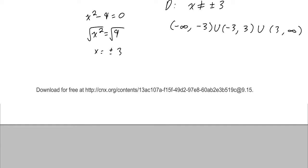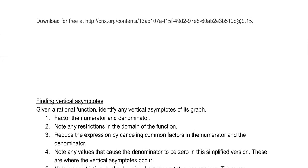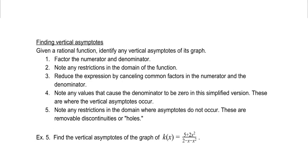To find vertical asymptotes given a rational function: factor the numerator and denominator, note domain restrictions, then reduce the expression by canceling common factors. Any values where factors cancel are removable discontinuities or holes. Values that make the denominator zero in the simplified version are the vertical asymptotes.